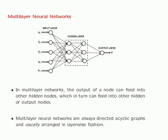I have shown an example of a multilayer neural network in this slide. As you can see, the nodes in the middle two layers do feed into other hidden or output nodes. One point to notice about this architecture is that it is a directed acyclic graph. All multilayer networks are always directed acyclic graphs. Furthermore, they are usually arranged in layer-wise fashion, meaning the nodes of the k-th layer typically feed into the nodes of the (k+1)-th layer.